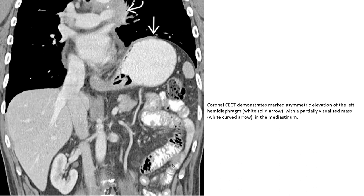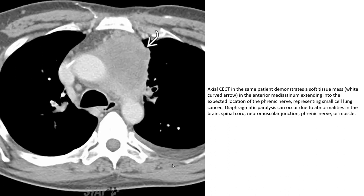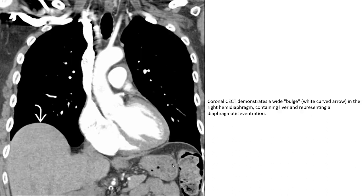Contrast-enhanced CT demonstrates marked asymmetric elevation of the right hemidiaphragm and a partially visualized mass in the mediastinum. Another contrast-enhanced CT shows a soft tissue mass in the anterior mediastinum extending into the expected location of the phrenic nerve, representing small cell lung cancer causing diaphragmatic paralysis.